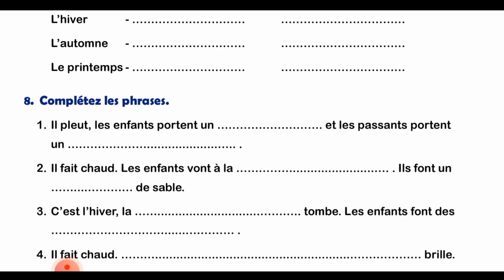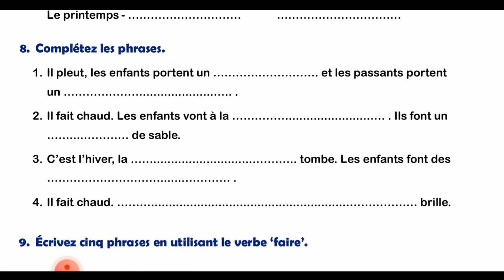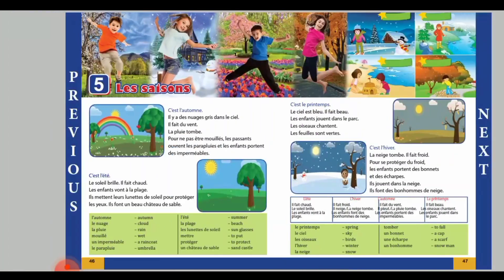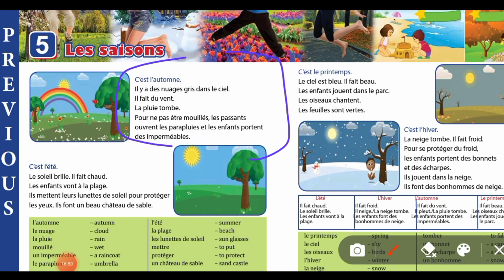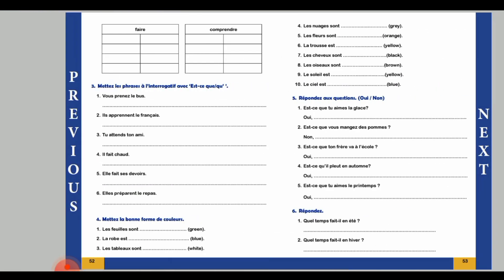All these things according to your knowledge you can write. Question number 8 says complete the phrases, which means complete the sentences. This question is based on the seasons we studied at the start of the chapter. The sentences are as it is - some words are missing and you have to fill in those words. Look at the page - autumn, spring - all these sentences have words missing. I hope you can do this question.